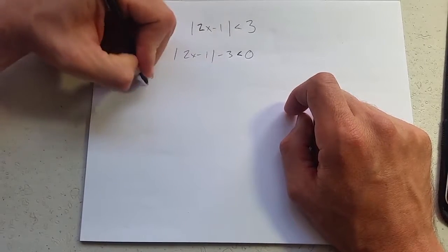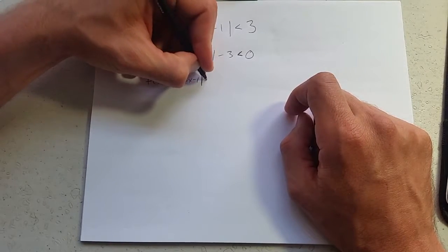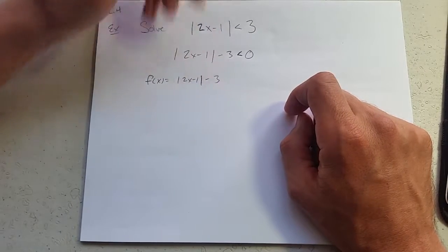So here's our function right here. We're going to give it a name, f of x equals absolute value 2x minus 1 minus 3.